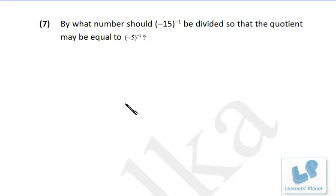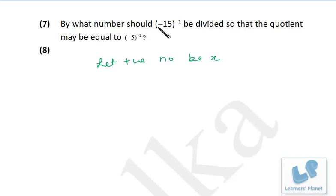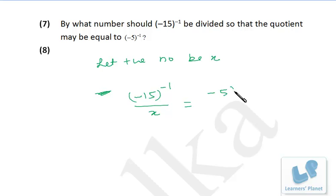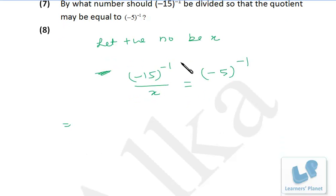Now let's see this question: by what number should minus 15 raised to minus 1 be divided so that the quotient is equal to minus 5 raised to minus 1? The same step — let the number be x. We have to divide this number by x. So it's minus 15 raised to minus 1 divided by x, and that is equal to minus 5 raised to minus 1. To eliminate the negative power, we write the reciprocal of the number inside the bracket. So it's minus 1 upon 15x.